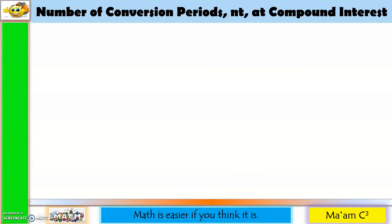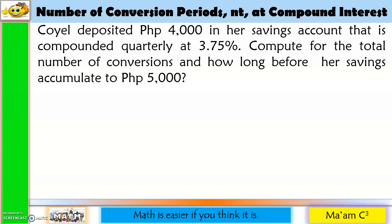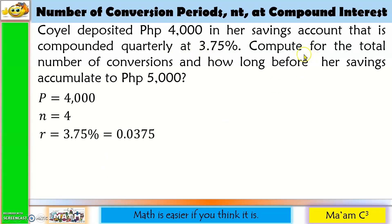Now let us talk about the total number of conversion periods Nt at compound interest. Goyal deposited 4,000 pesos in her savings account compounded quarterly at 3.75%. We need to compute the total number of conversions and how long before her savings accumulate to 5,000. So P is 4,000, N is 4, and R is 0.0375.